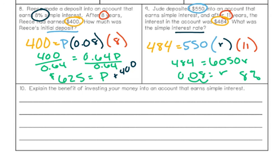This last question asks: explain the benefit of investing your money into an account that earns simple interest. In the beginning of this lesson, we talked about a savings account versus a piggy bank. The key benefit is that when you put money into an account that's earning interest, that money is sitting there unused anyway, and you're earning money off of it so that when you go to use it, there will be more in the account. If you use a piggy bank, the amount would not increase as time passes.